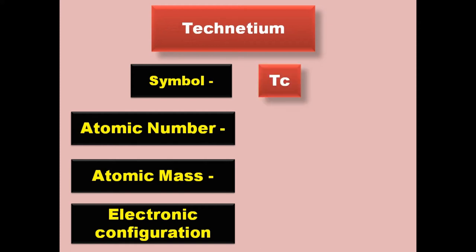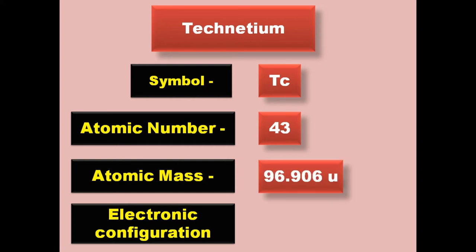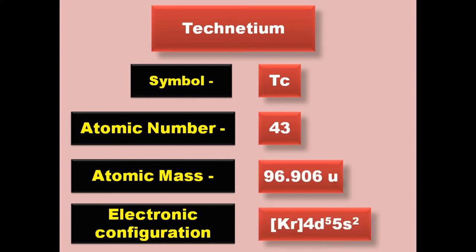Technetium has symbol Tc, atomic number 43, atomic mass 96.906, electronic configuration [Kr] 4d5 5s2. Technetium is a transition metal and exists in solid form at room temperature.